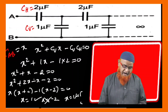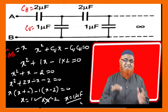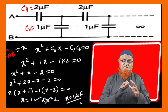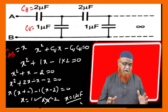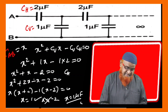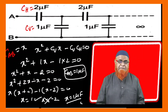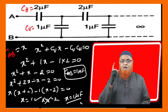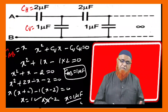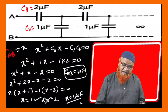The final answer is X = 1 microfarad, which is the equivalent capacitance C_AB. So C across AB is 1 microfarad. Thank you very much, have a nice day.